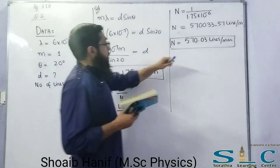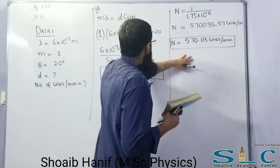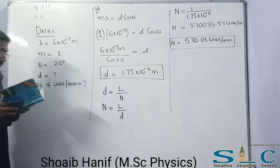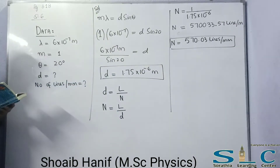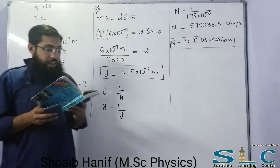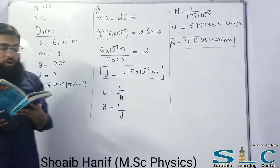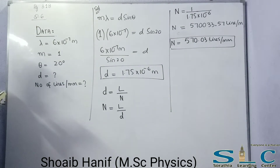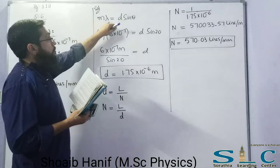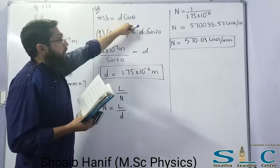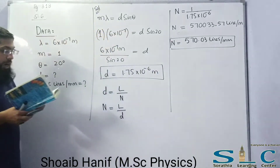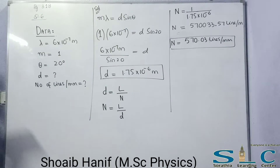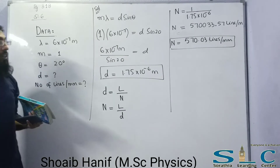Question number 6 is complete. A similar question, question number 4, is also related to the diffraction grating and can be solved the same way using the formula m·λ = D·sinθ.